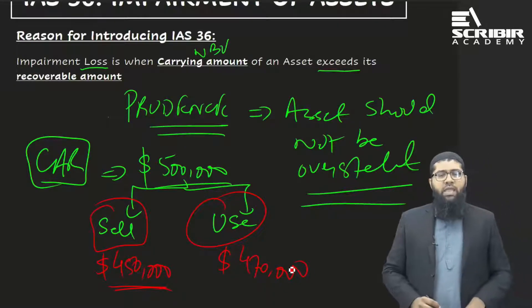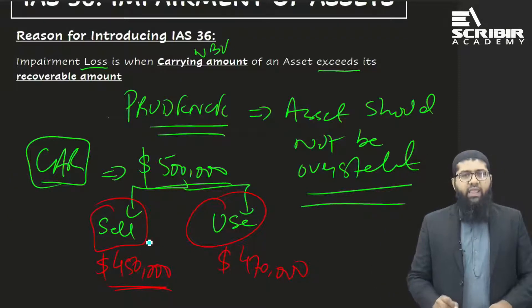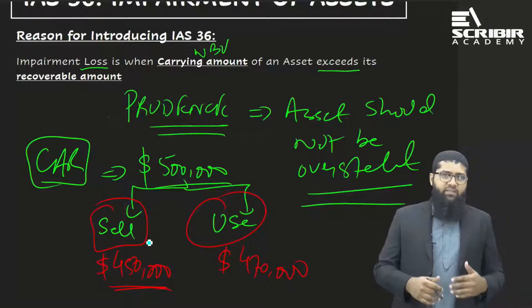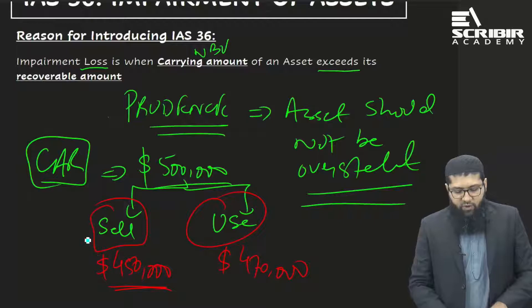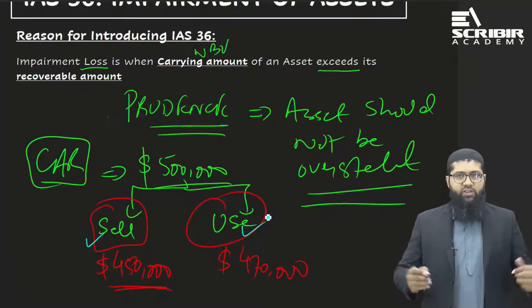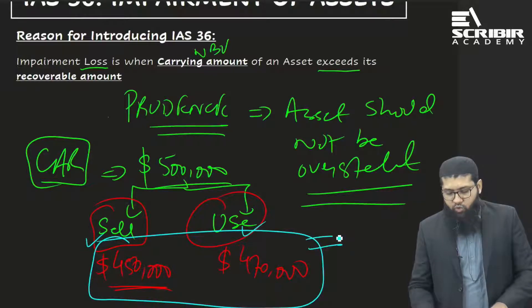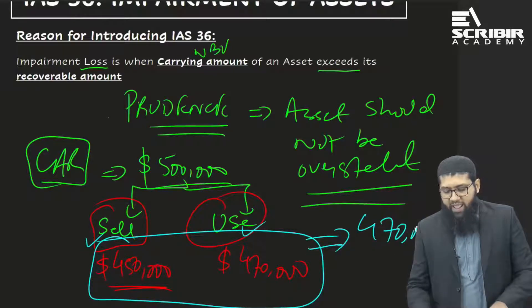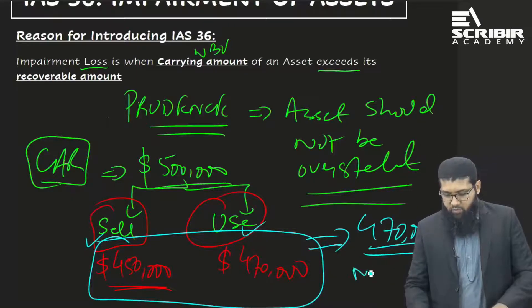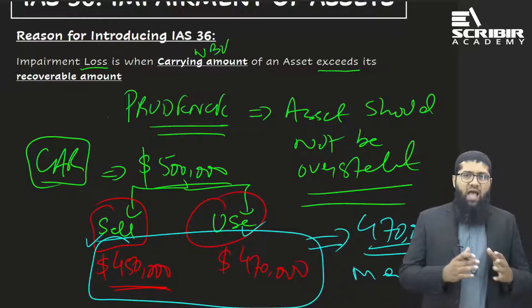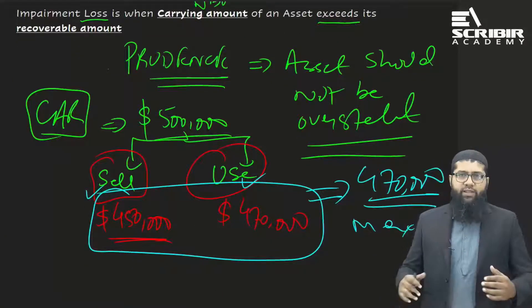What we have established here is that to recover our investment in this car, we could either sell it or use it. The maximum benefit from either selling or using is four hundred and seventy thousand. This is the maximum benefit we can derive from this car.